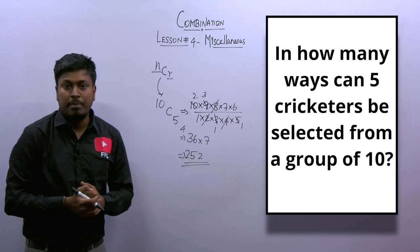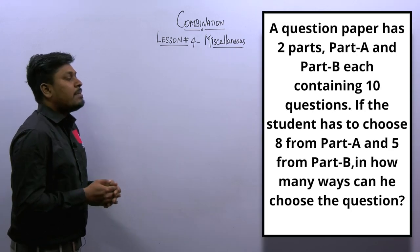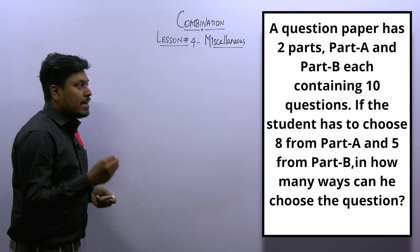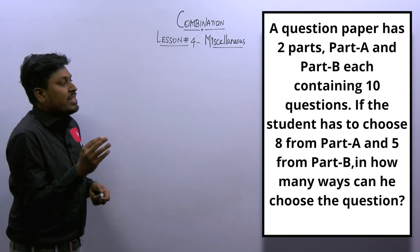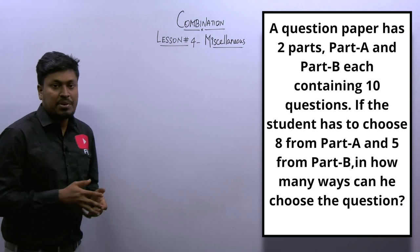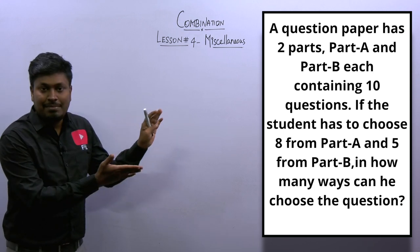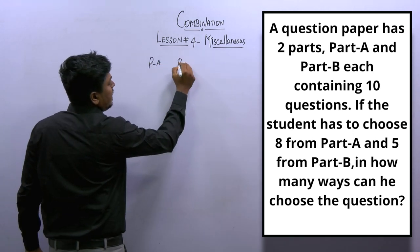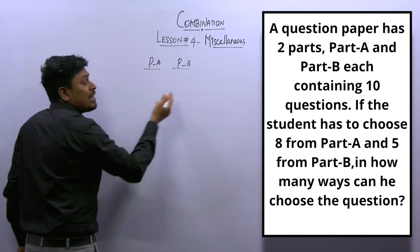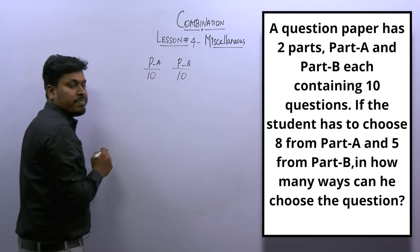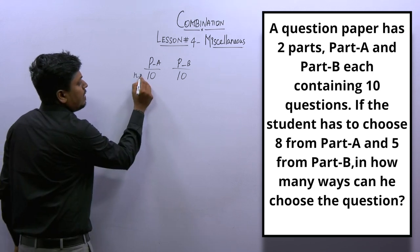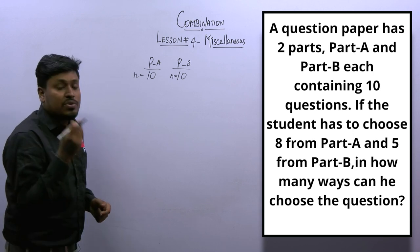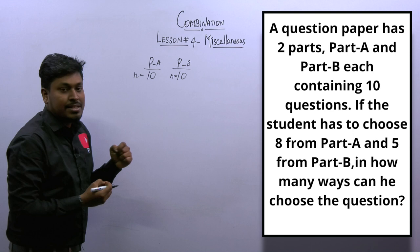Question number 2: A question paper has 2 parts, Part A and Part B, each containing 10 questions. If the student has to choose 8 questions from Part A and 5 questions from Part B, in how many ways can he choose? The question looks lengthy but the concept is easy. Each part has 10 questions, so N = 10 for each.